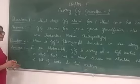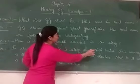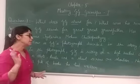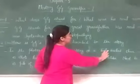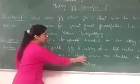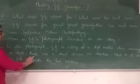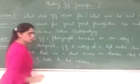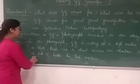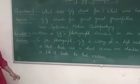In the photograph, Gigi is sitting on a high-backed chair — his chair with a high support. He is wearing dhoti, kurta, and a shawl across one shoulder. Next to it, means next to the photograph, next to it was a pile of books he had written. You know well that he had written so many books when he was alive. So next to his photograph was a pile of books he had written.